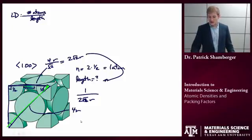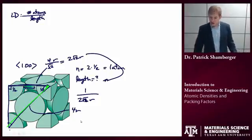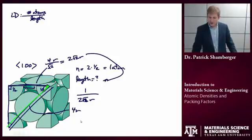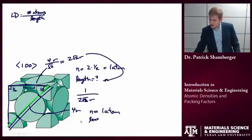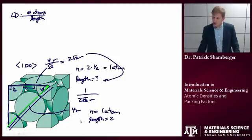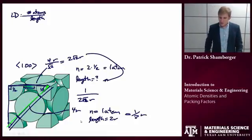One thing worth noting is that I don't need to use the full line as I drew it, because the linear density is independent of how long that line is. If I just look at this [1,1,0] family and go from one atom center to the next, n equals 1 atom and the length equals 2r, so again I get 1 over 2r — the same as what I calculated using the previous method.